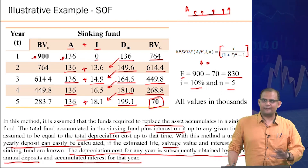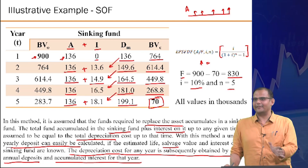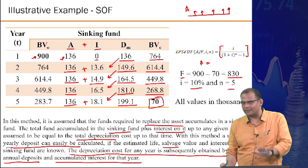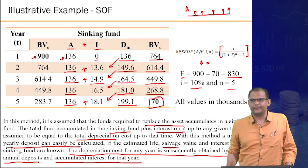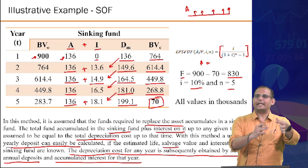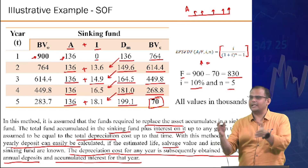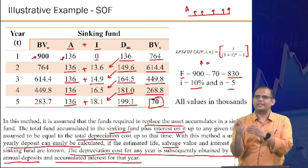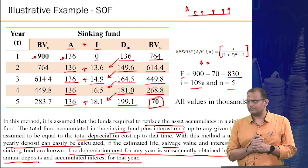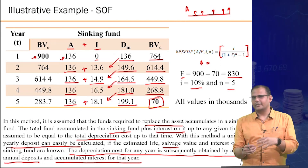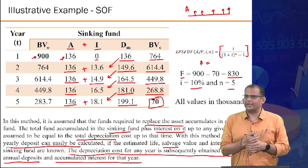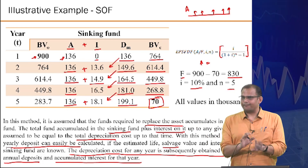The slides have been modified to make the sinking fund calculation more apparent. The key concept: actual depreciation each year = A plus the interest accumulated in the sinking fund up to that period. Once you know the depreciation and original book value, you can calculate book value at any time t.